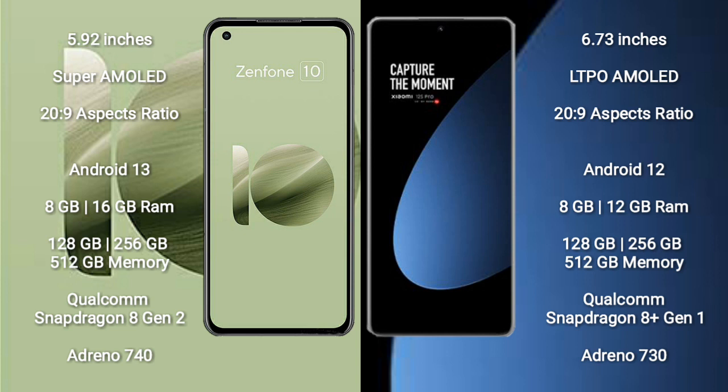The Asus Zenfone 10 comes with 8GB or 16GB RAM and 128GB, 256GB, or 512GB internal storage, powered by the Qualcomm Snapdragon 8 Gen 2 processor and Adreno 740 GPU.